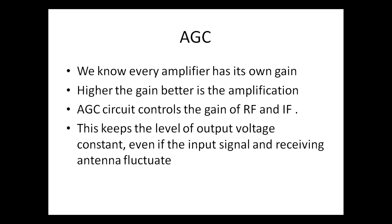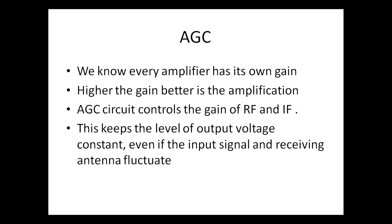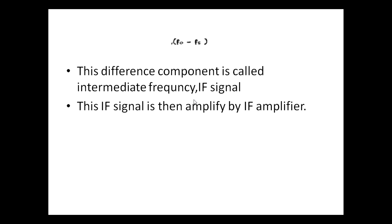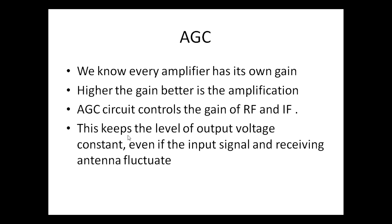One of the important parts in our superheterodyne receiver is AGC — automatic gain control. The AGC section is very important. Every amplifier has its own gain; higher the gain, better is the amplification. If an amplifier has a higher gain, its amplification is very high. The AGC circuit controls the gain of the RF and IF stage, and keeps the level of output voltage constant even if the input signal at the receiving antenna fluctuates.